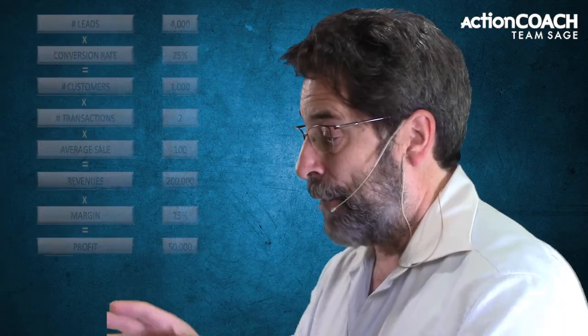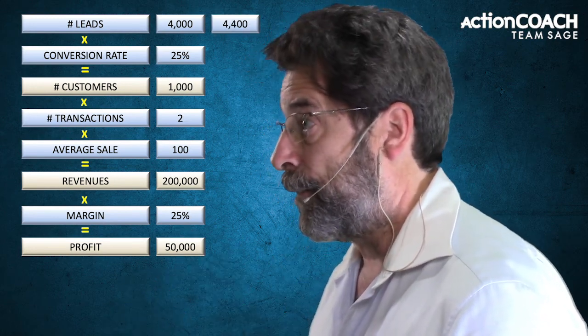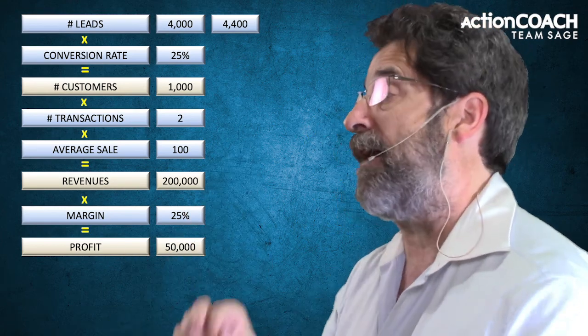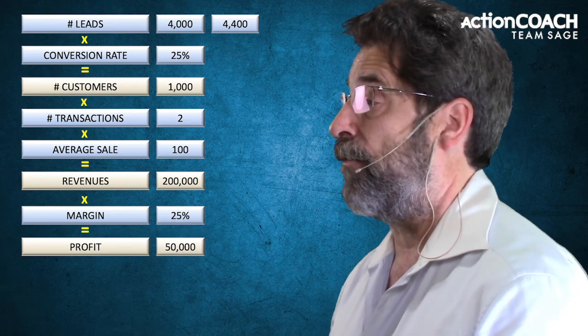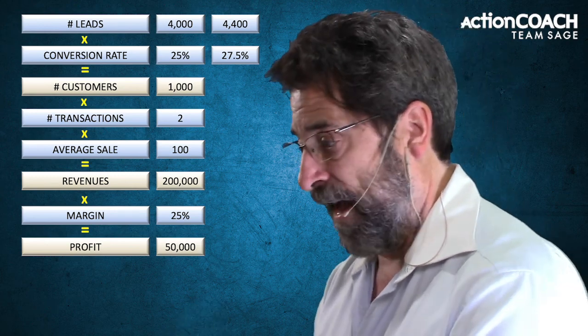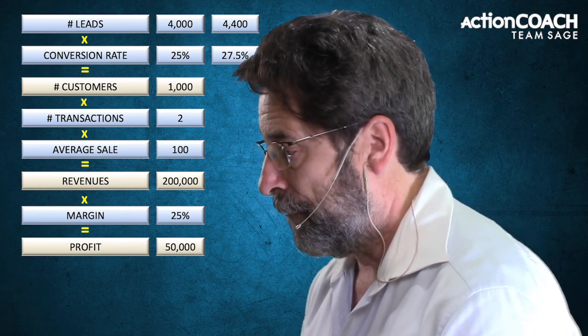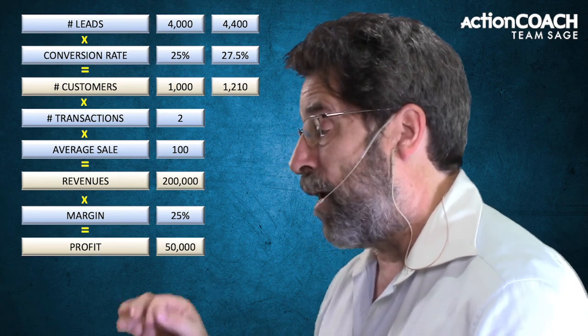Why is this important? It's important because when we start to increase these numbers, because they're multiplied together, it makes a huge difference. So what if we only increase them by 10%? If I take my 4,000 leads and multiply by 10%, that gives me 4,400. If I take my conversion rate of 25% and increase that by 10%, I get 27.5%. Taking 4,400 leads multiplied by 27.5% conversion rate gives me 1,210 customers.